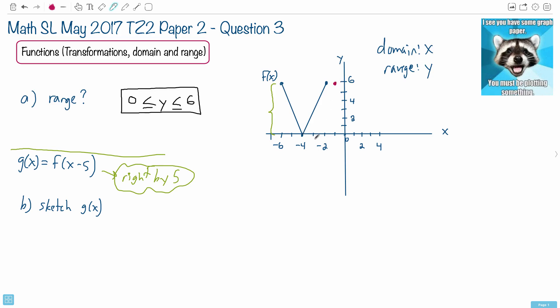This point right here, which is at minus four, it's going to go to the right by five. So one, two, three, four, five.